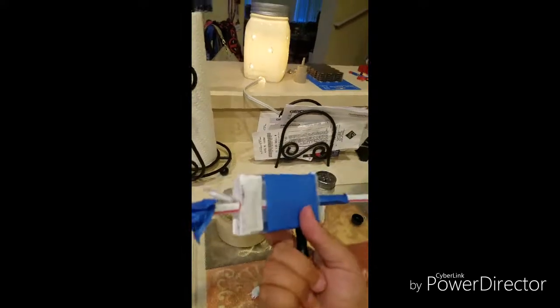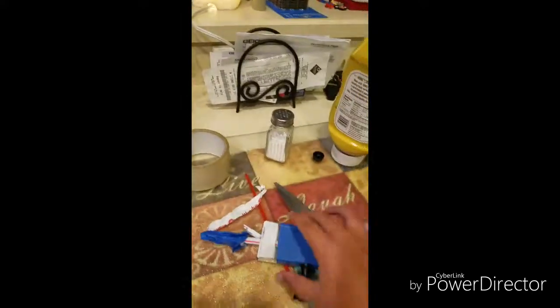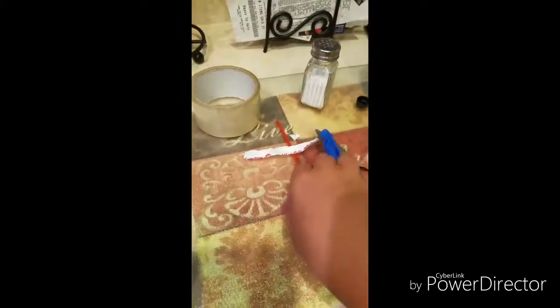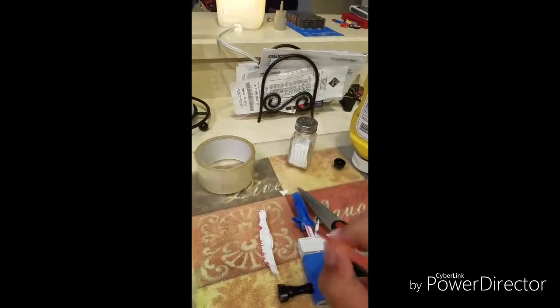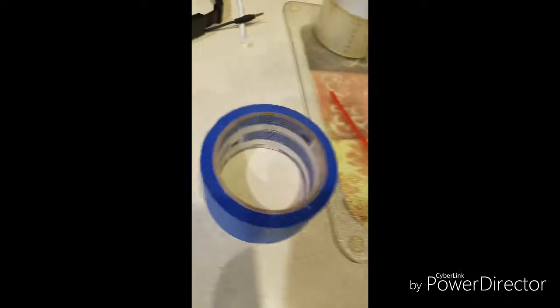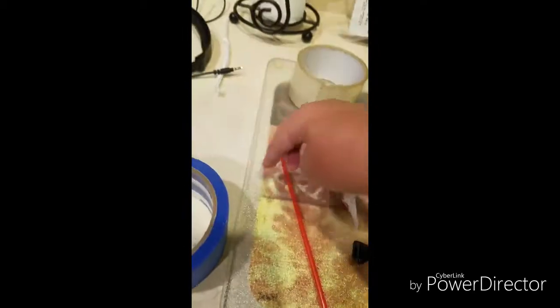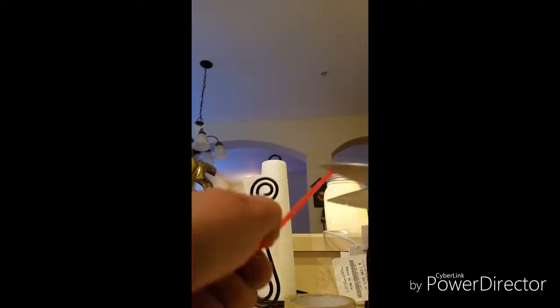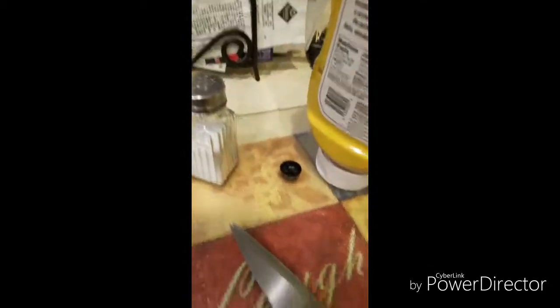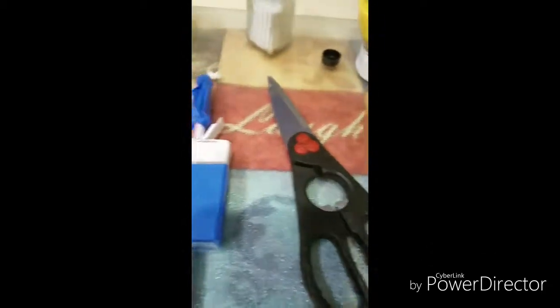So I got the straw stuck in one of these holes I poked in the lid hole right there. What you're gonna do now is you're gonna cut off, get a little tiny straw like this or get the same type of straw you got, and then cut a little piece.